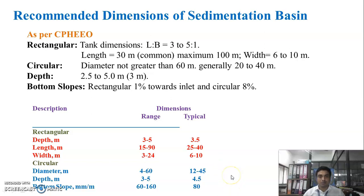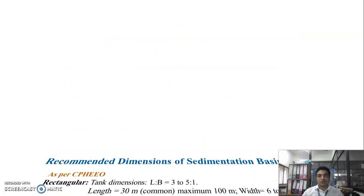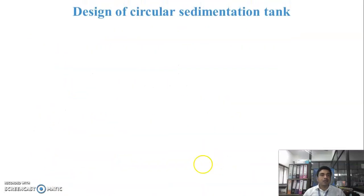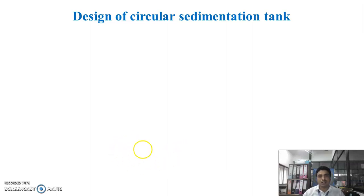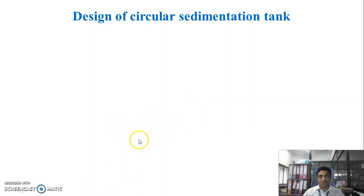As per the Central Public Health Environmental Engineering Organization, we will now take one example of the design of a circular sedimentation tank. There are various types of sedimentation tanks — circular type and horizontal type. First, we will design the circular type sedimentation tank.